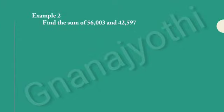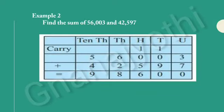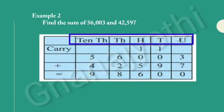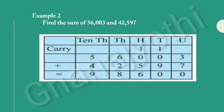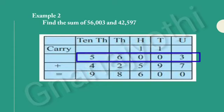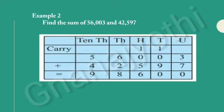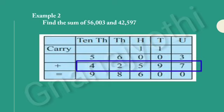Now, let us see one more example. Find the sum of 56,003 and 42,597. This is also a 5-digit number. We have to find the sum of 56,003 and 42,597. This is the place value chart for a 5-digit number. It contains units, tens, hundreds, thousands and ten thousands. For 56,003: 3 is in units place, 0 is in tens place, 0 is in hundreds place, 6 is in thousands place, and 5 is in ten thousands place. For 42,597: 7 is in units place, 9 is in tens place, 5 is in hundreds place, 2 is in thousands place, and 4 is in ten thousands place.